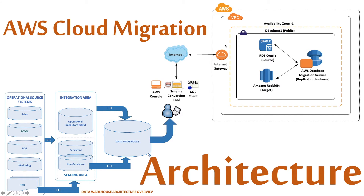Availability zones — for example, if you live in New York or the East Coast, you prefer to store your data in the East zone. That is one availability zone. Some companies, especially global organizations, keep multiple copies — one on the East Coast and another on the Pacific Coast in the Western region — for disaster recovery. Let's assume you have one availability zone for your current architecture.